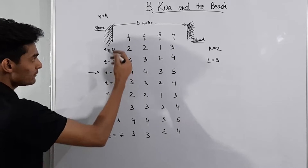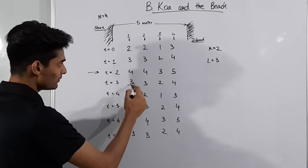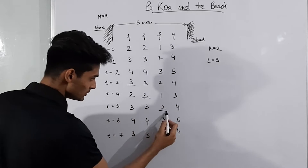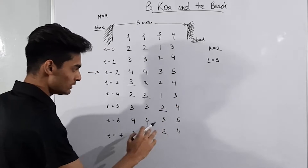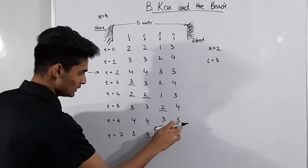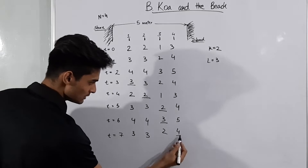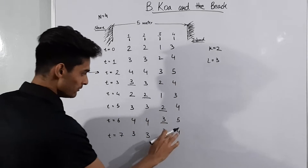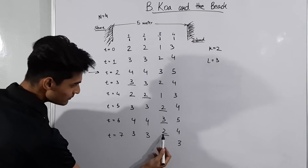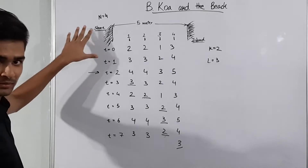Now let's try starting at t=2. We reach point 1 at depth 3 which is ≤ 3, so that's fine. Moving to the next point gives depth 2, also fine. Moving again gives depth 2, still okay. The next move would reach depth 5 which exceeds 3, so we wait. After waiting we get depth 3, still ≤ 3 but the next step would again exceed 3. We wait again, get depth 2, then 3, and now moving gives depth 3 which is ≤ 3. We can reach the island.